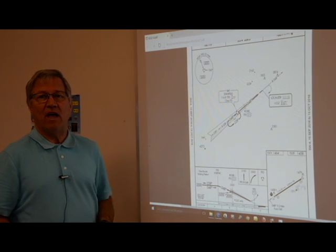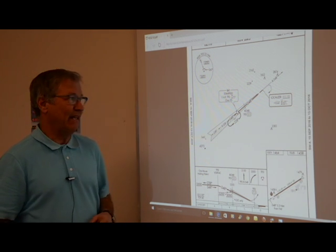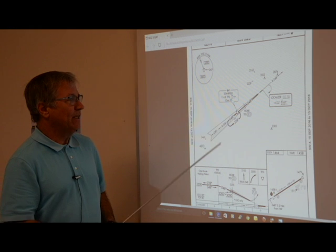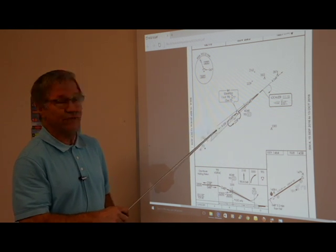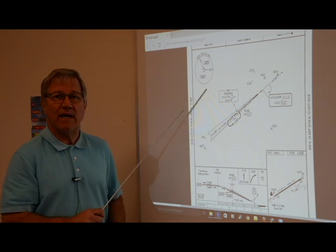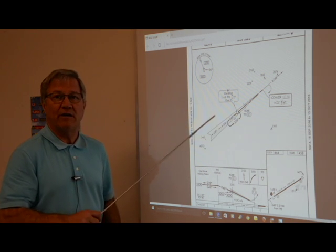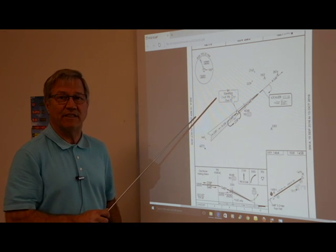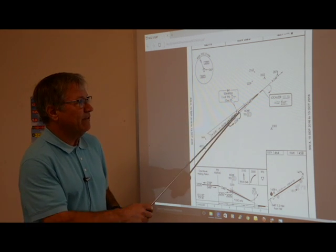Alright, now let's talk about flying the ILS and how accurate we need to be and how to maintain that accuracy. If we're doing the hold in lieu of procedure turn and coming onto the localizer coming out of the hold, we will see the localizer come alive at about 2,500 feet prior to the center line. We'll start to see the case break on the needle.